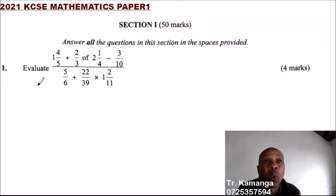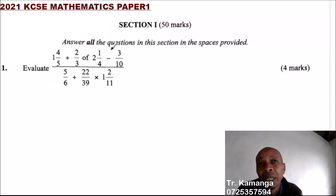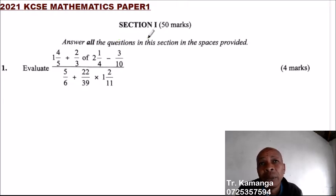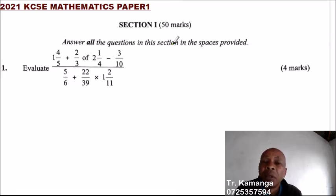This is the 2021 KCAC Mathematics Paper Division, Section 1. A paper consists of two sections: Section 1, which is 50 marks, and Section 2, which is also 50 marks.